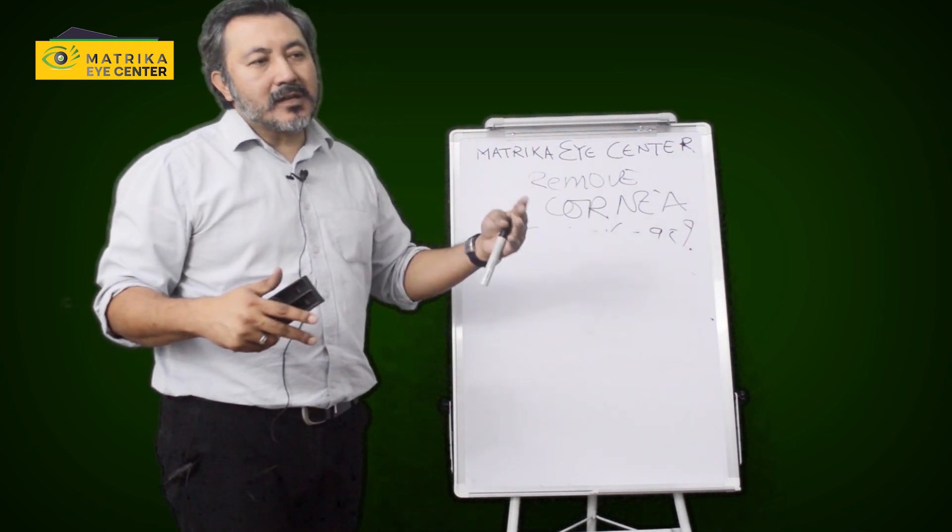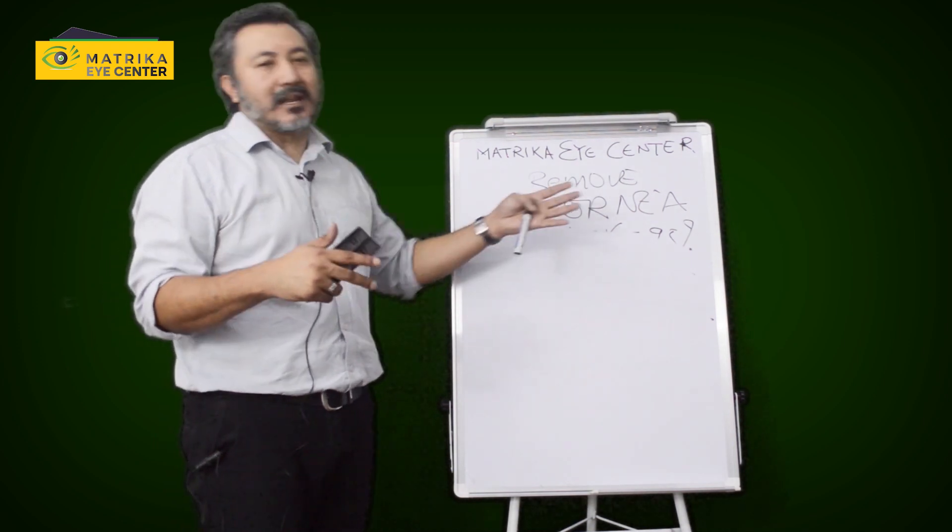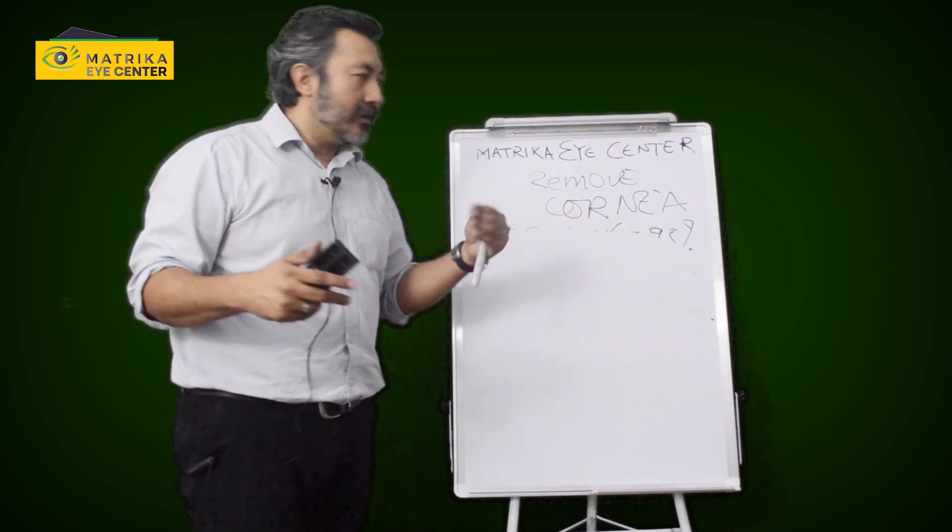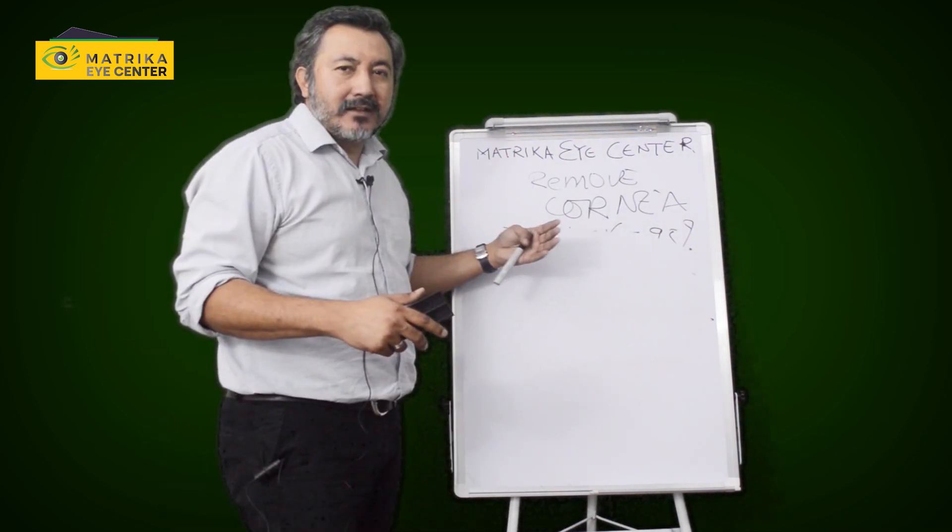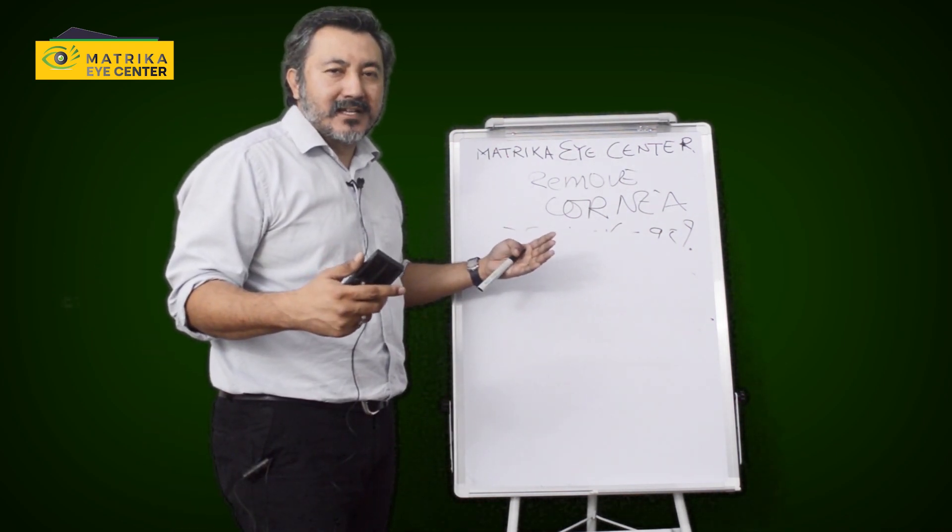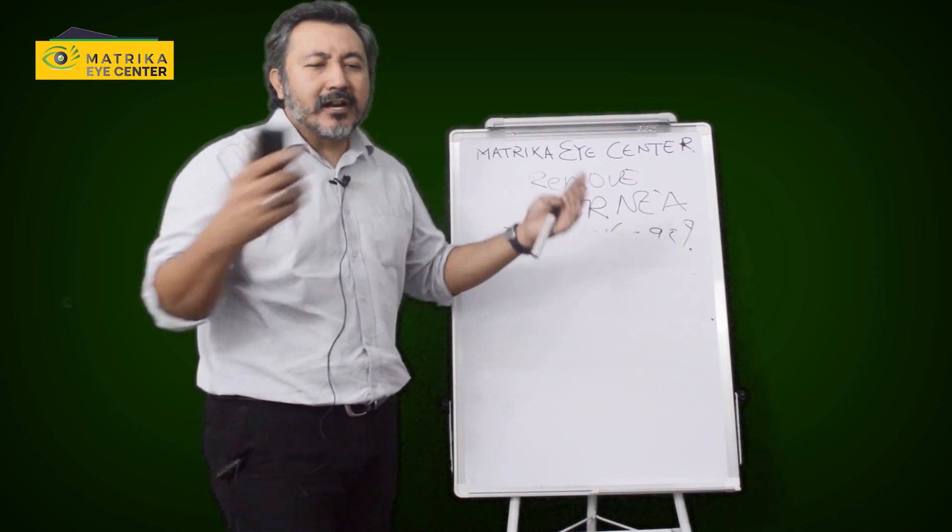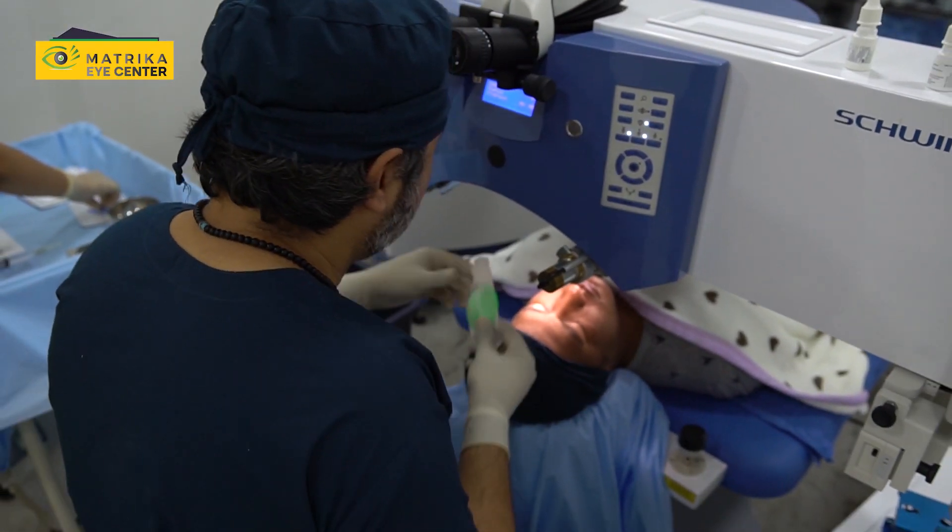For other lasers, they also have something called Contoura, which is like SmartSurf. So Contoura is for Alcon. For Schwind, it is SmartSurf. For Zeiss, I don't know. So these are the things that I would really emphasize to patients so that you don't get confused on different lasers. Just two lasers, okay?